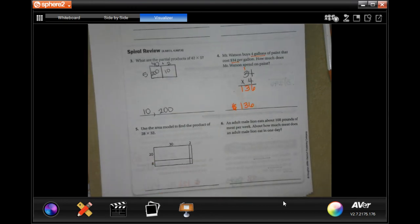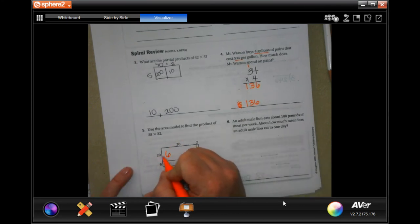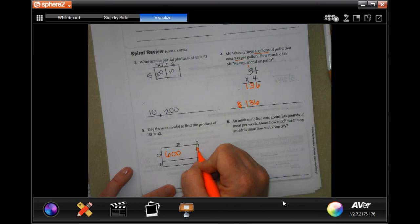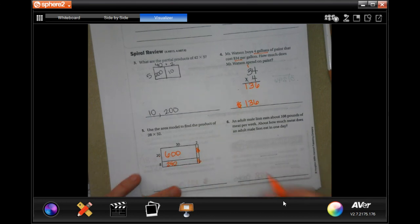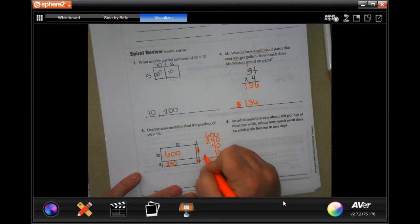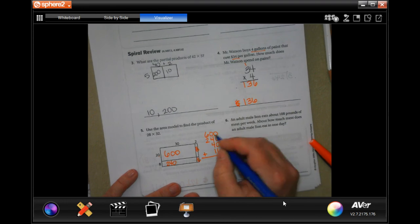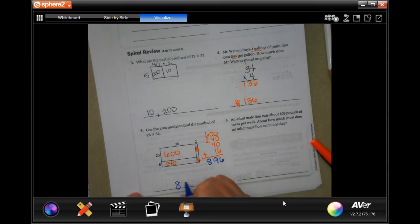Use the area model to find the product of 28 times 32, so let's write in our answers. Two times 3 is 6, plus one zero. Two times 2 is 4, plus one zero. Eight times 3 is 24, plus one zero. And 8 times 2 is 16. Now over here we're going to line up and then add. All those zeros and a 6. Four plus 4 is 8, plus 1 more is 9. And 6 plus 2 is 8. So 896.